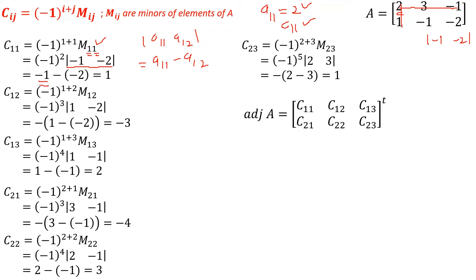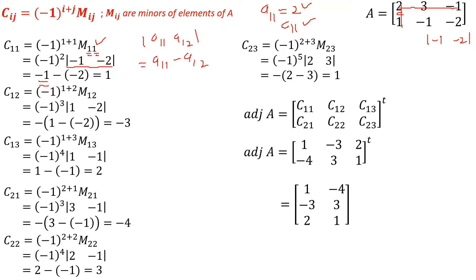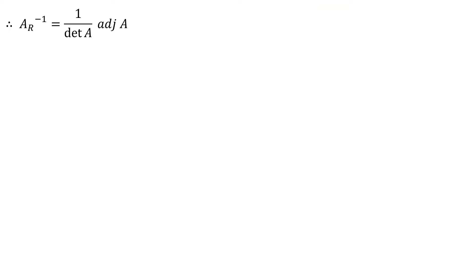Now we have found all six cofactors. The adjoint of A equals the transpose of these cofactors. Putting in values C11, C12, C13, C21, C22, C23, we get the matrix [1, −3, 2; −4, 3, 1], and taking the transpose, the adjoint of A equals [1, −4; −3, 3; 2, 1]. Therefore, A-R-inverse equals 1 over the determinant of A into the adjoint of A, which is (1/−9) times [1, −4; −3, 3; 2, 1].